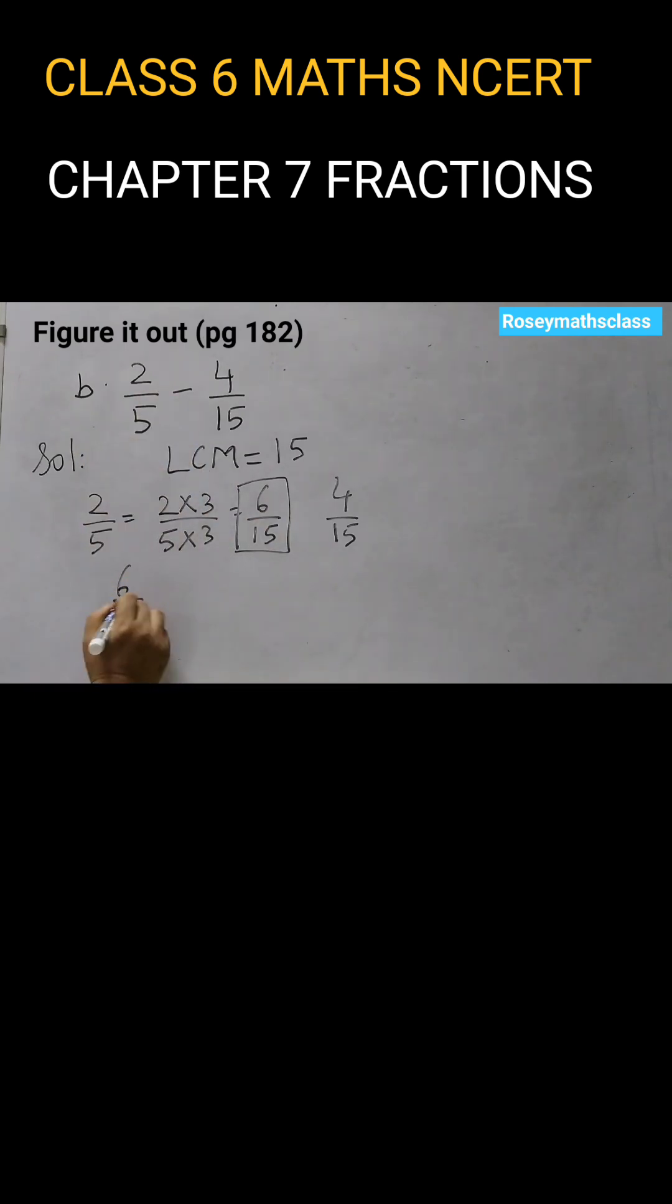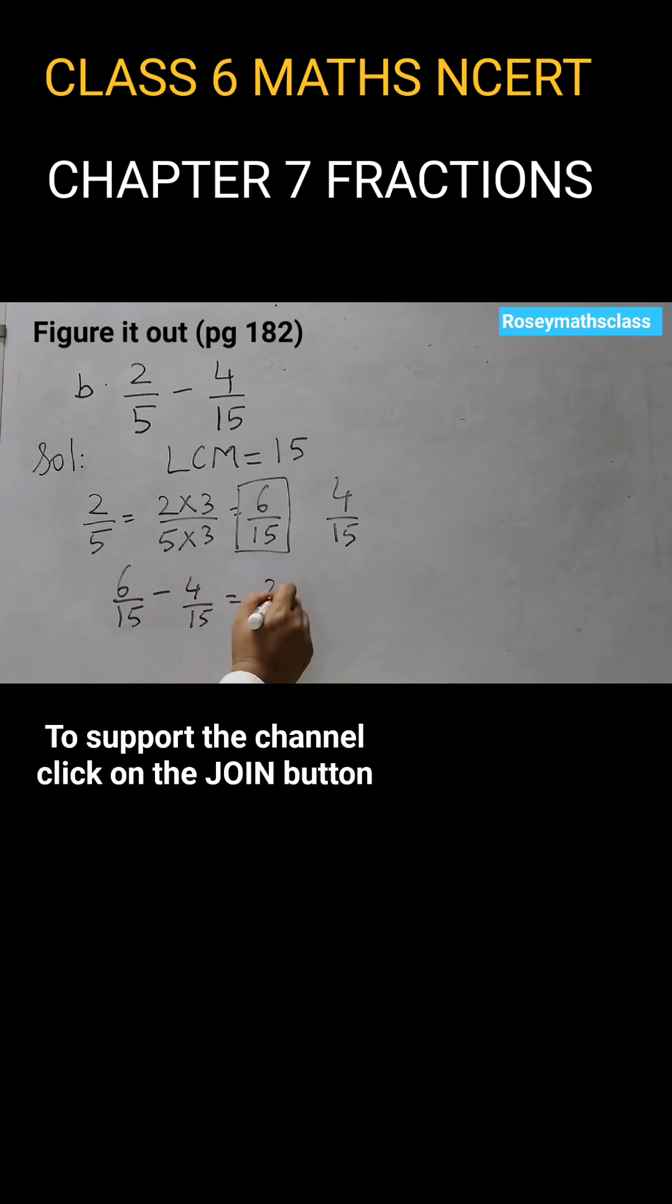Now we will subtract. So 6 upon 15 minus 4 upon 15. 6 minus 4 is 2. So that's 2 upon 15. And that's the answer for the second one.